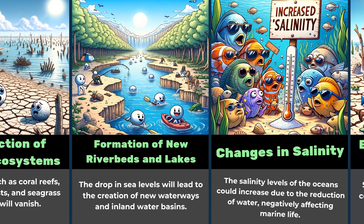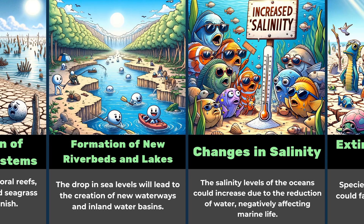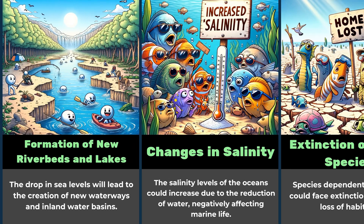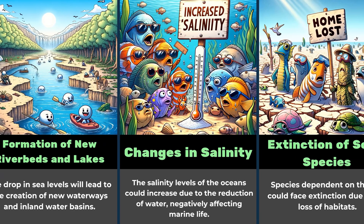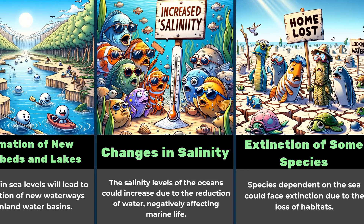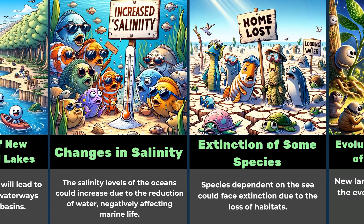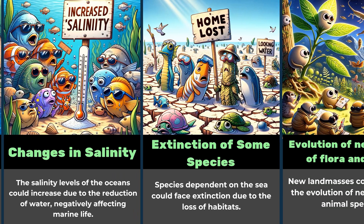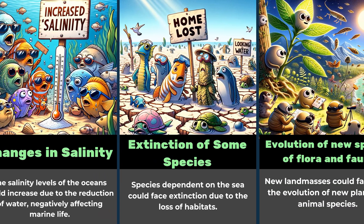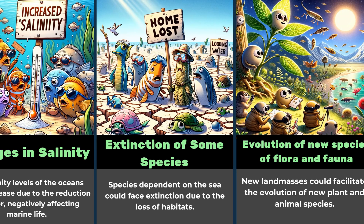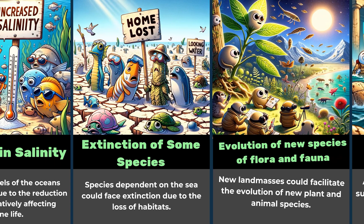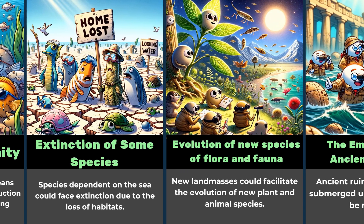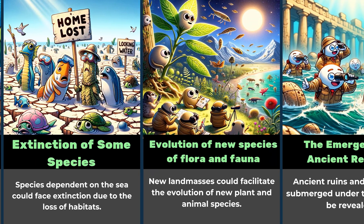The salinity levels of the oceans could increase due to the reduction of water, negatively affecting marine life. Species dependent on the sea could face extinction due to the loss of habitats. New land masses could facilitate the evolution of new plant and animal species.